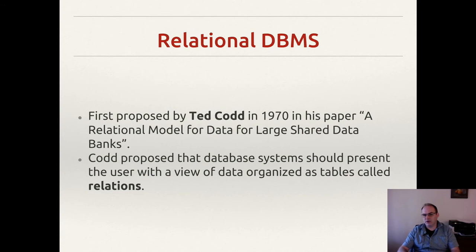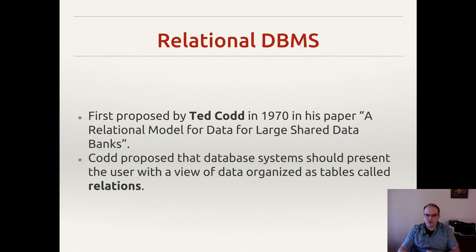The other thing Codd brings up is normal form, which is going to be a whole other subject. In a nutshell, normal form basically says we are not going to have repeated data. The other big one is we're going to have a universal, high-level language that allows us to manipulate and access the data.